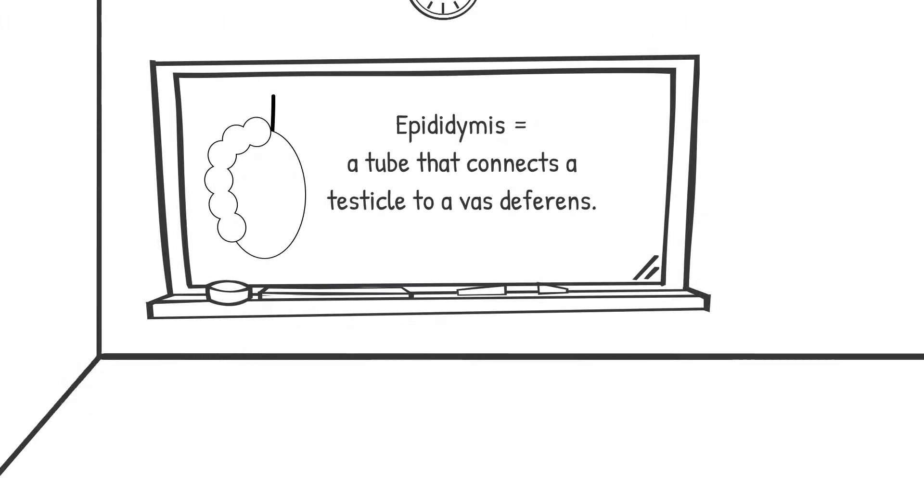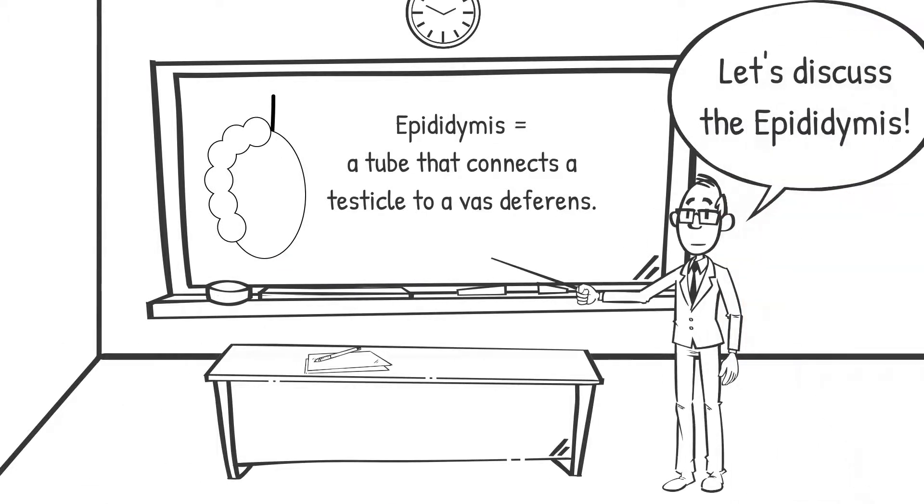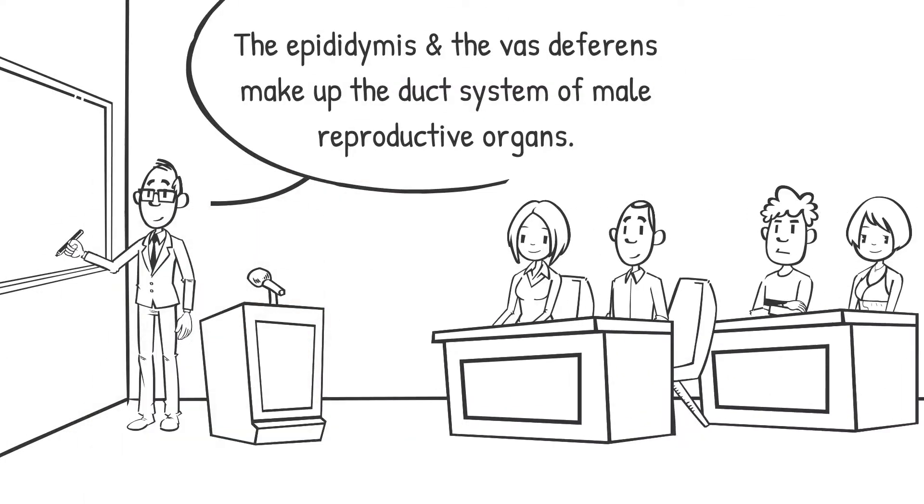The Epididymus is a little-known but well-researched part of the male reproductive system. It is a set of two coiled tubes, one for each testicle, that connects the testicle directly to the vas deferens.